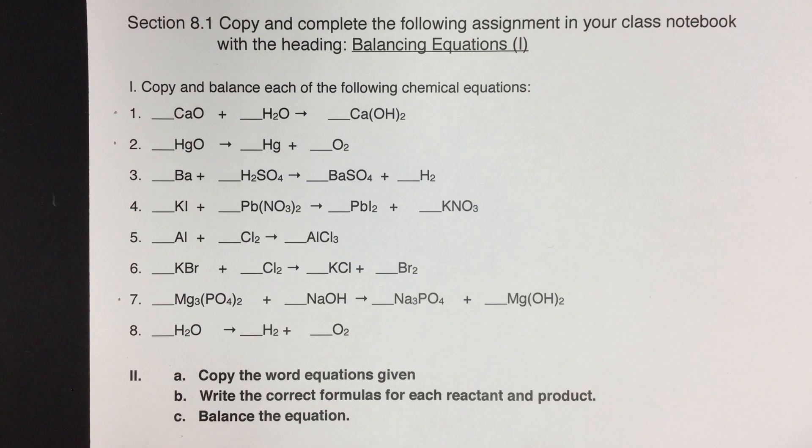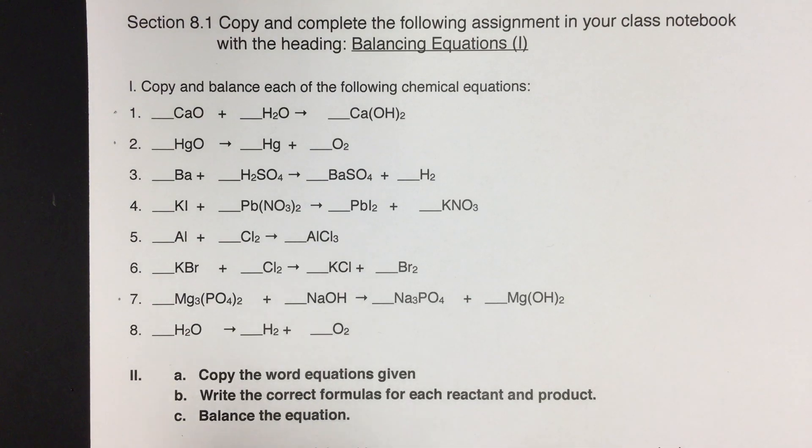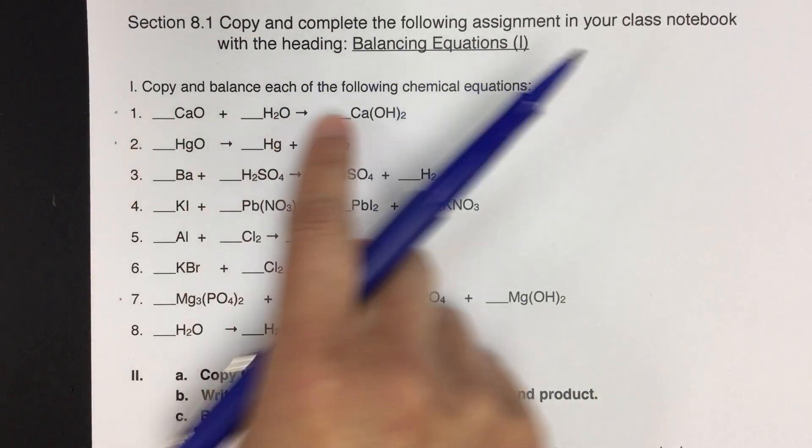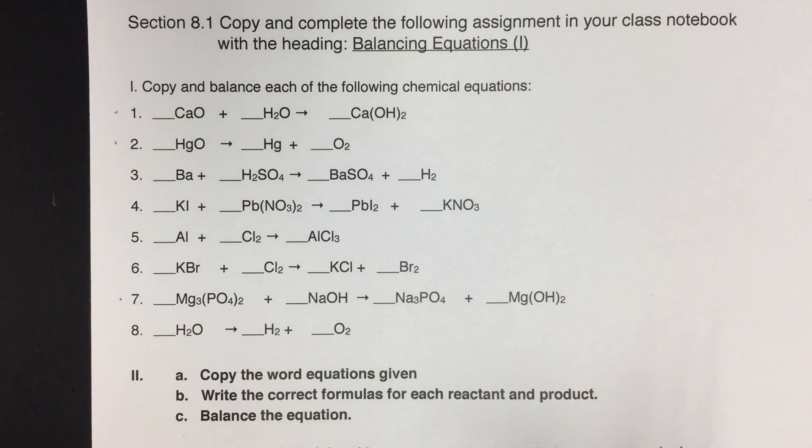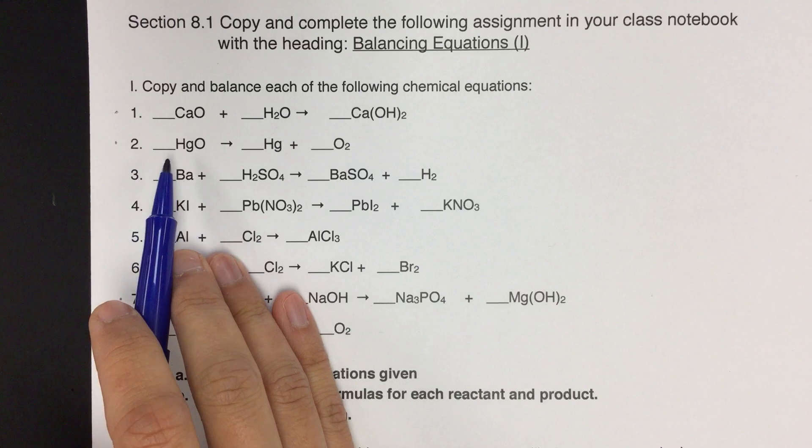So if you don't need to, if you're not adding a number, if it's one, if you need one of any of these things, we generally do not write the number one. We just leave it as it is, and the one is implied. Okay? So we'll move on to number two.